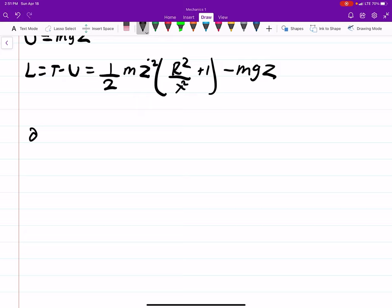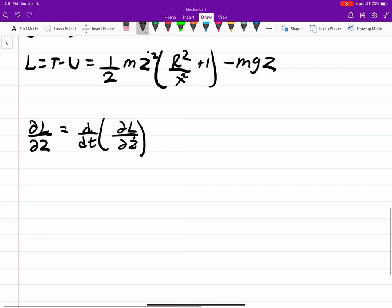So dL/dz equals d by dt of dL/dz dot. dL by dz is pretty easy because there's only one term that has a z, so we're just going to get a minus mg here equal to d by dt.